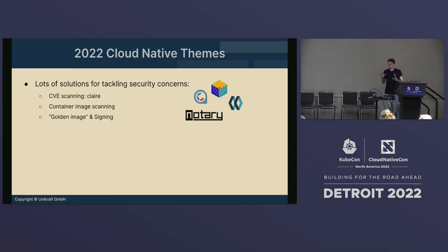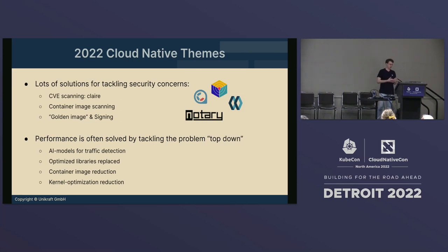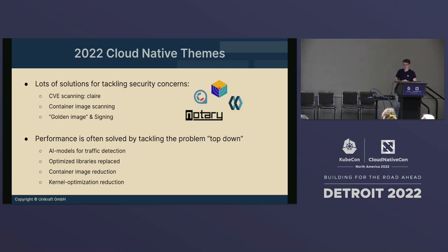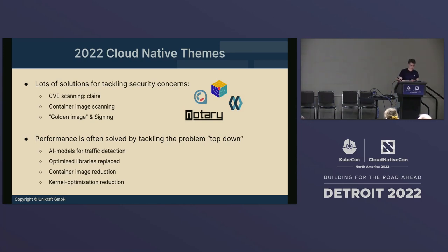The idea here is we're going to step back and ask: what's the overall problem, in the sense that we are looking at a traditional system? The other theme is performance and how we tackle this — there's a lot of introspection. We have AI models to look at traffic detection, or we look inside and change the libraries, compile them to make them more specialized. There are slimmers like Docker Slim, Slim AI, and a number of ways to reduce what we have to make it smaller and therefore more performant. Overall, we're introspecting, looking at something, and trying to find ways to make it more secure and more performant.